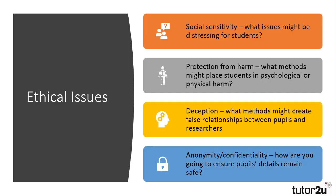Which brings us to a final point: anonymity and confidentiality. Pupils may face ridicule, particularly working class boys, if it is known that they have cooperated with a researcher. Alternatively, they may fear the repercussions if they disclose the behaviour of other pupils or teachers, and so it is imperative that anonymity and confidentiality is maintained.